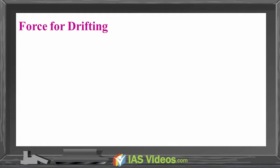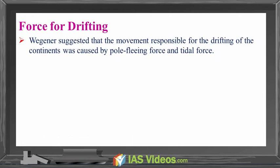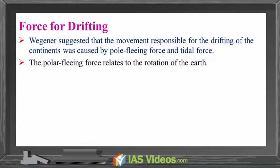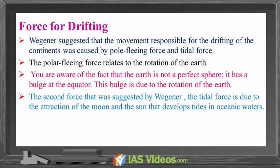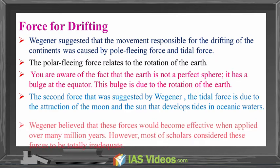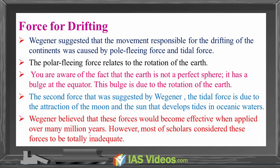Force for Drifting. Wegener suggested that the movement responsible for the drifting of the continents was caused by polar fleeing force and tidal force. The polar fleeing force relates to the rotation of the Earth — the Earth is not a perfect sphere and has a bulge at the equator due to its rotation. The tidal force is due to the attraction of the Moon and the Sun that develops tides in the oceanic waters. Wegener believed these forces would become effective when applied over many million years; however, most scholars consider these forces to be totally inadequate.